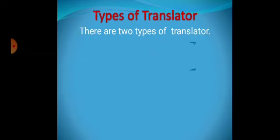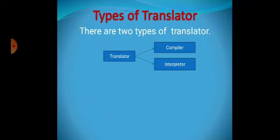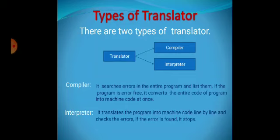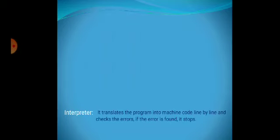Next, the different types of translators. There are two types of translators: one is a compiler and the next is an interpreter. A compiler is a translator which searches for errors in the entire program and lists them. If the program is error-free, it converts the entire code into machine code at once. An interpreter is a translator which translates the program into machine code line by line and checks for errors. If an error is found, it stops.